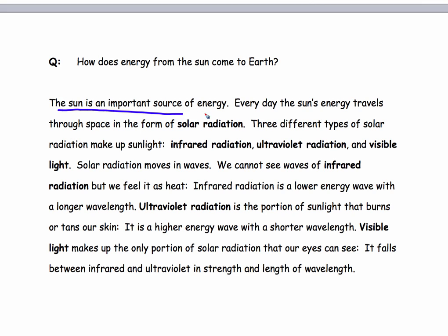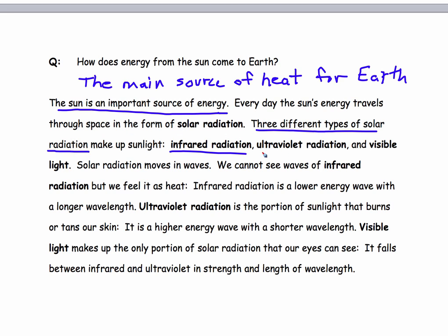Sun is an important source of energy, the main source of heat for Earth. And then there are three types of solar radiation. And they are infrared, ultraviolet, and visible light.